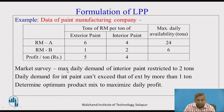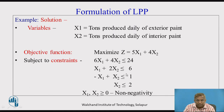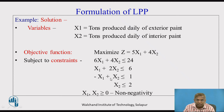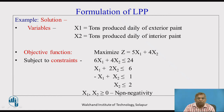Another market survey line tells us the daily demand for interior paint cannot exceed that of exterior paint by more than 1 ton. Mathematically, this is put as x2 − x1 ≤ 1, or equivalently −x1 + x2 ≤ 1. So in all we have four constraints — two from raw materials and two from the market survey. Lastly, if we do not manufacture anything, x1 and x2 can take zero value but not negative, which is mathematically expressed as x1, x2 ≥ 0 — referred to as the non-negativity constraint.